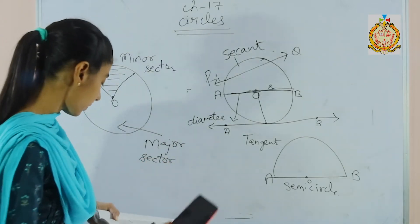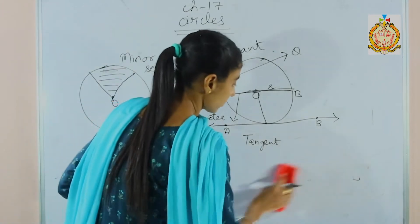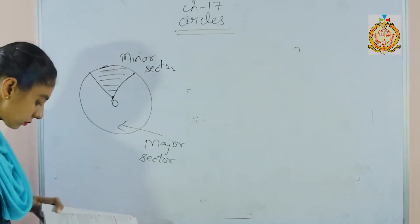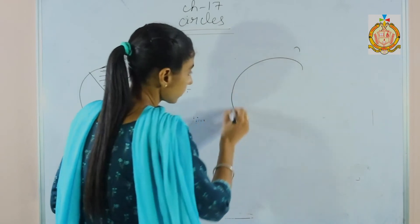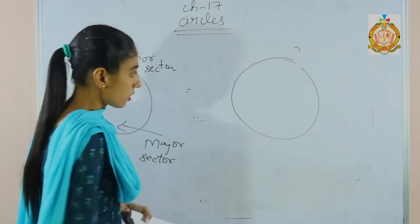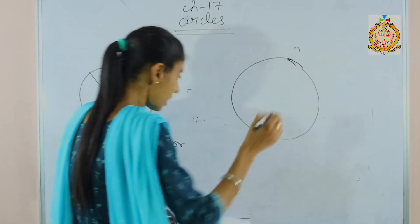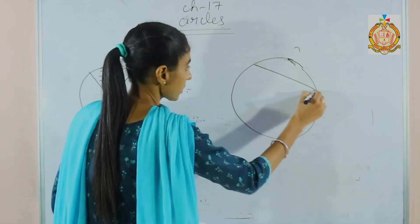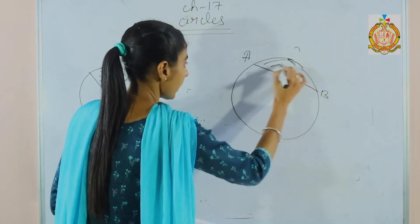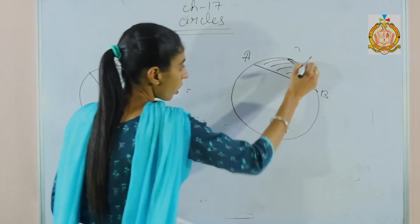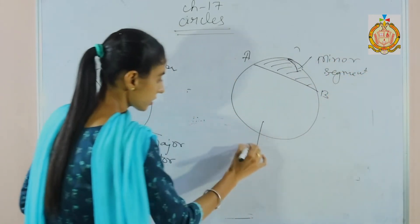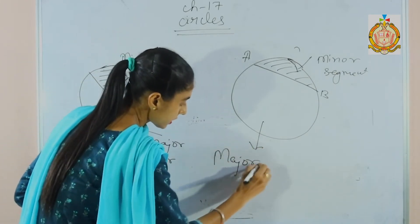Next is the segment. A chord divides the circle into two parts — these are called segments. The shaded portion is called the minor segment, and this is called the major segment.